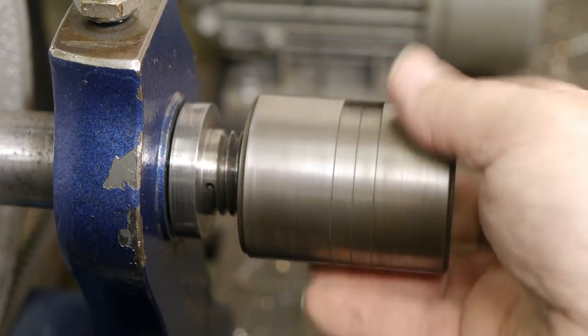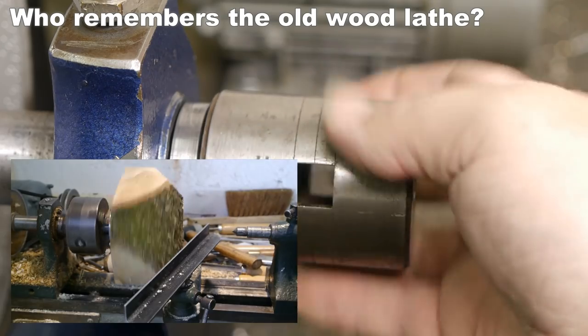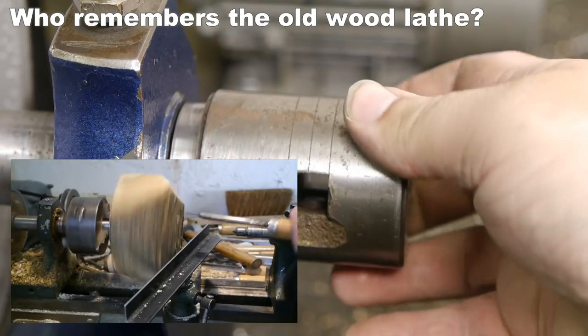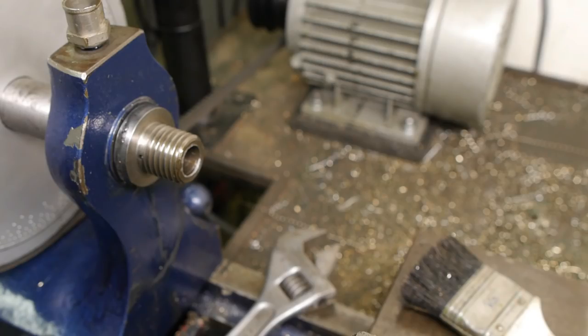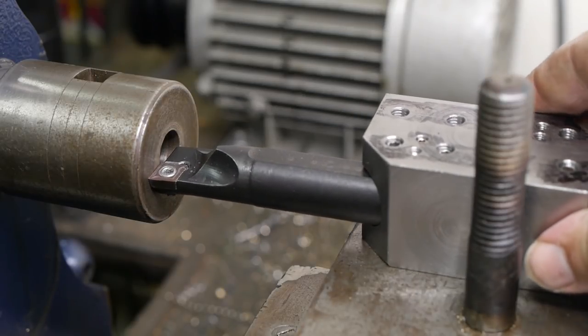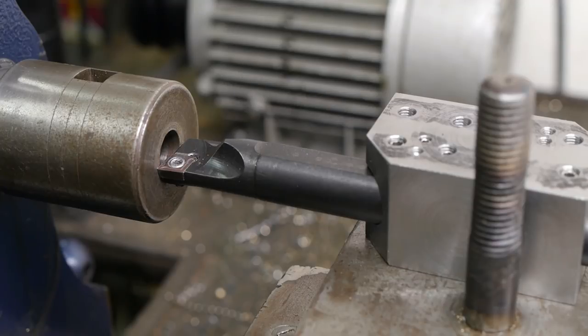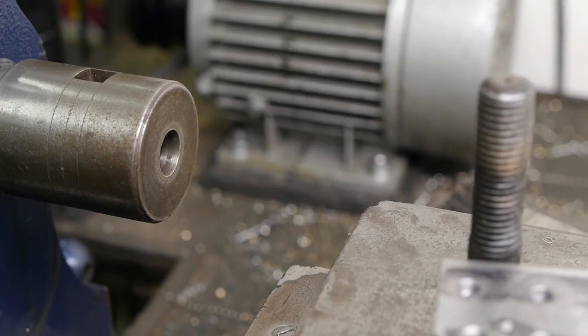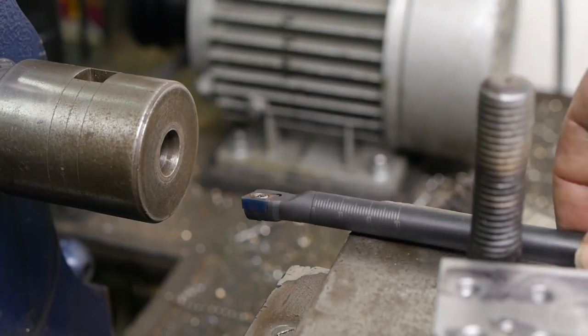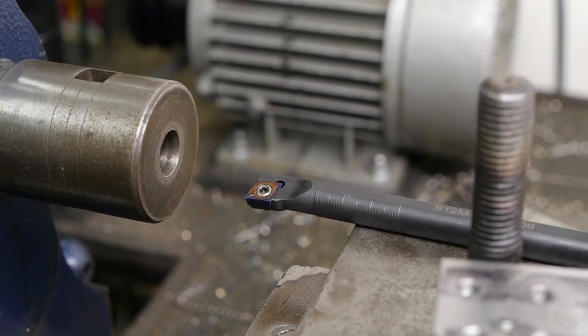I got this spindle nose attachment that came with my old wood lathe and now I want to modify it. But unfortunately my boring bar is too big for the hole. So I need to make another holder for this 12mm boring bar that does fit. Sure I could shim it up, but since I have a quick change tool post on my Chinese lathe, I don't really want to use shims anymore.